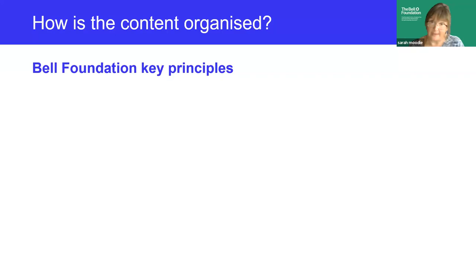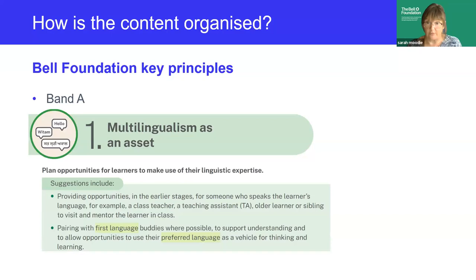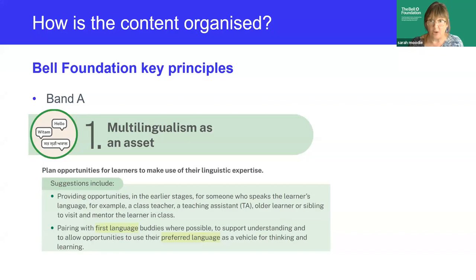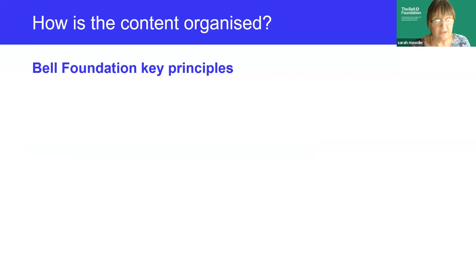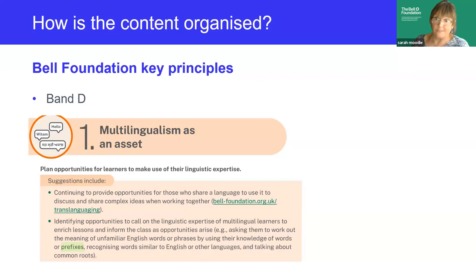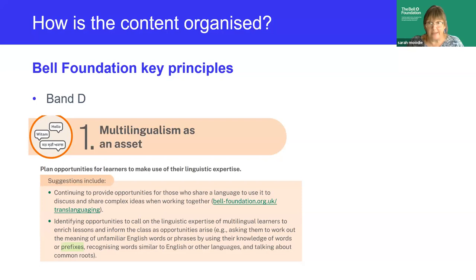The principles are revisited through the proficiency bands to reflect the learner's progression. For example, at band A primary, the suggestion is for first language mentoring or first language buddies, because what the child has brought with them at that stage is their home language — that's the only learning resource they have. Fast forward to band D and you have the same principle in action: the learner has progressed to an intermediate level of English, and can now be asked to reflect on and talk about the differences and similarities between English and other languages they know, deepening their cognitive and linguistic ability.